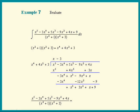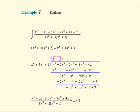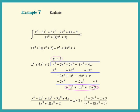So the original fraction is equal to the quotient x minus 3 plus the remainder divided by the divisor. I'll write it back in terms of the factors because we're going to integrate.